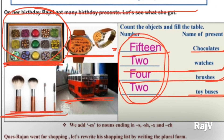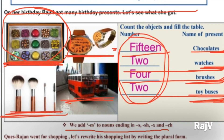Aap dekh rahe hain — yeh plural ho gaya hai, ek se zyada ho gaya hai. Toh ismein kya add kiya hai? Dhyan dijiye. Chocolate hota hai, usme S add karke usko plural banaya hai. Watch hoti hai — ek watch hoti hai, zyada watches hoti hain — toh ismein ES add kiya hai. Ek brush hota hai, plural karne ke liye ES add kiya hai. Then ek bus hoti hai, one is bus, and more than one are called buses — ES add kiya hai. So yahan par wahi aapko diya hua hai: we add ES to nouns ending in S, SH, X and CH. Jaisi ki one is church, more than one are called churches. Toh pehla humne rule kiya tha S ka — S add karne se nouns hum bana sakte hain plural. Aur doosra humne abhi abhi seekha hai — ES add karne se bhi kya bana sakte hain? Plurals bana sakte hain.